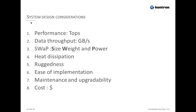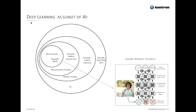In any embedded system design, the following eight criteria are very important: processing performance, data throughput, SWAP (size, weight, and power), heat dissipation, ruggedness (shock and vibration), high and low temperature operation, waterproofness, and ease of implementation. Maintenance of the system in the future, especially for the software, is also very important. And finally, the cost of the solution. We will judge the three options later in this presentation based on those eight criteria.